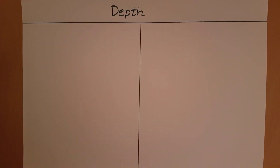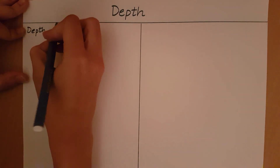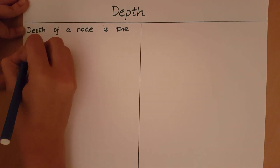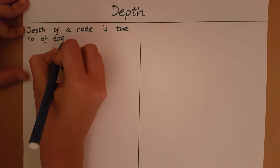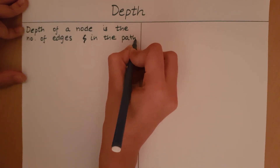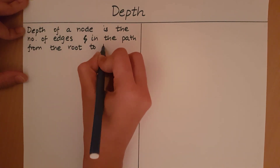In this video we will take a look at what we mean by the depth of a node with respect to the data structure trees. The depth of a node is the number of edges in the path from the root of the tree to that node.